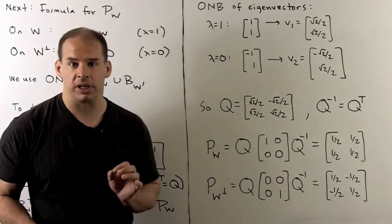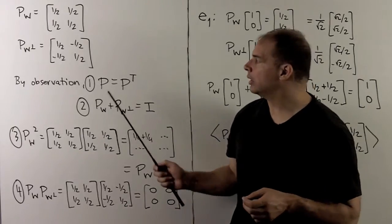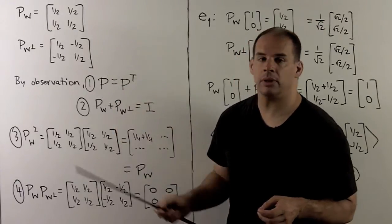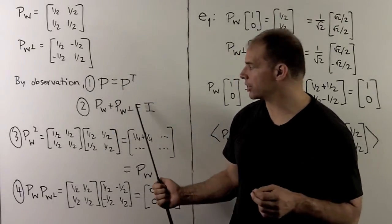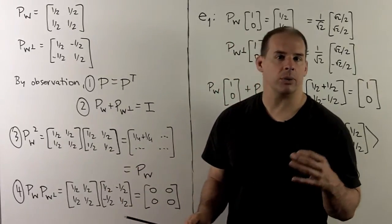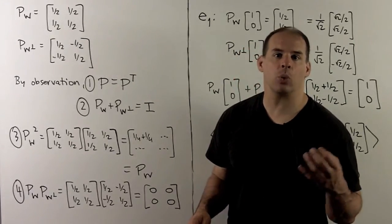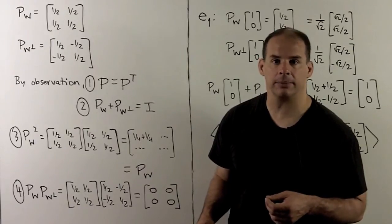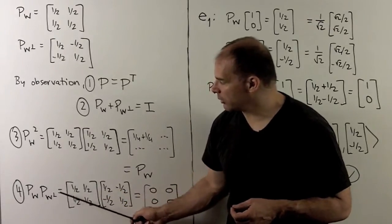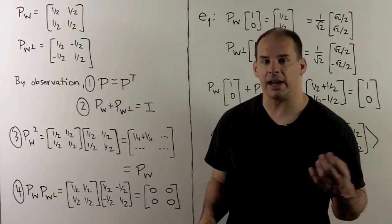Our next step is to check all the properties. By observation, P_W and P_{W⊥} are both symmetric. We also see their sum equals the identity matrix. If we square P_W, we get 1/4 + 1/4 = 1/2 in each entry, giving P_W back — so P² = P holds. Finally, taking the product P_W · P_{W⊥}, we get all zeros — the zero matrix, as expected.